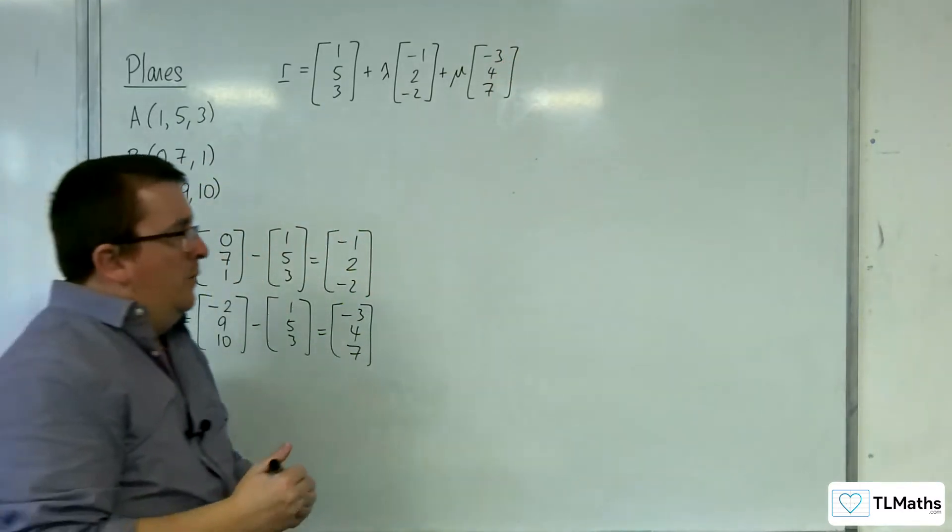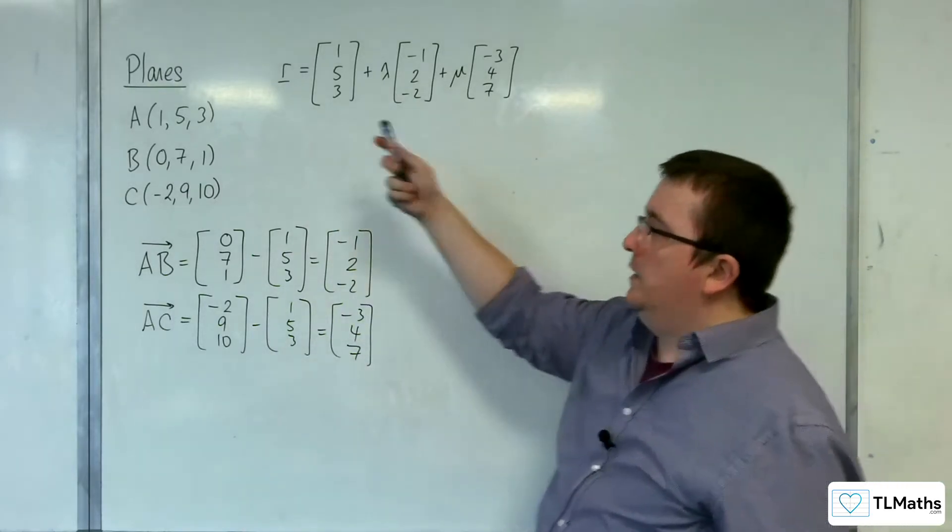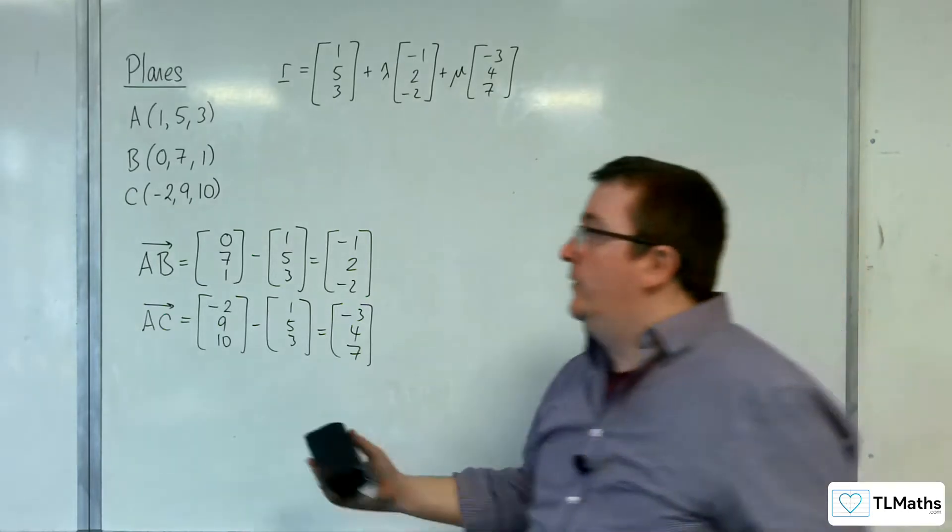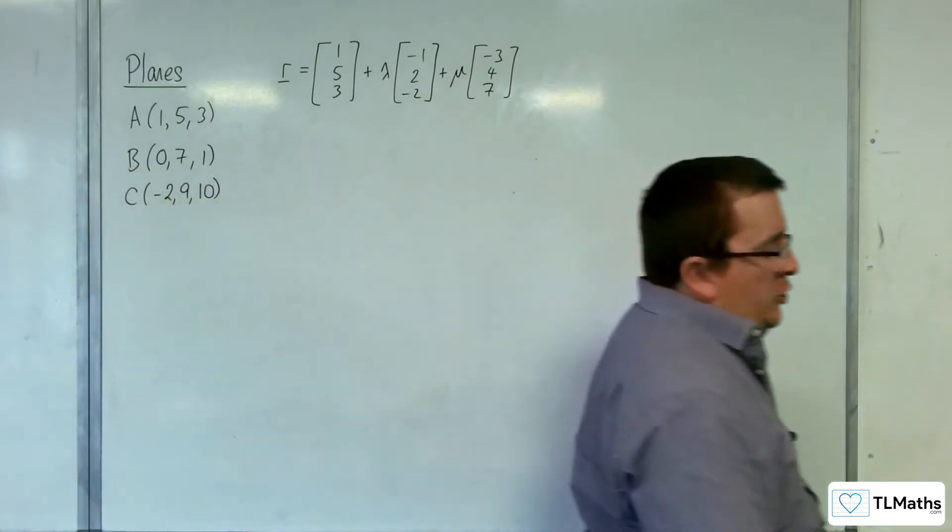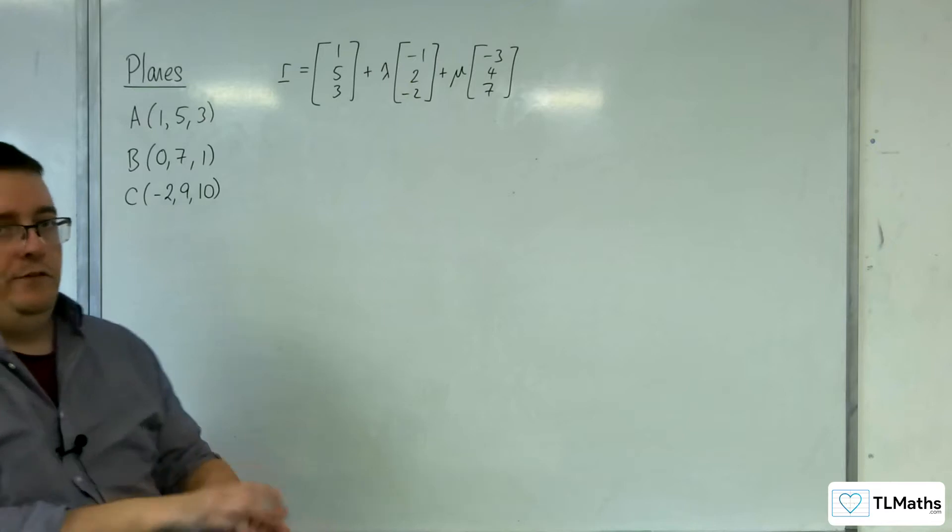Okay, so this is the vector equation of the plane going through those three points. So the job now is to try and convert this into Cartesian form.